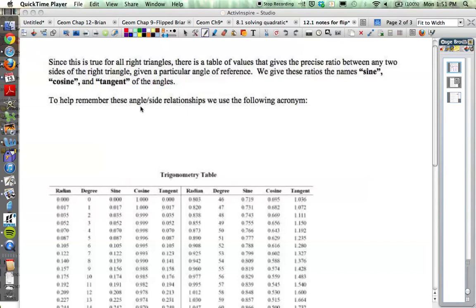Since this is true for all right triangles, there is actually a table of values that gives the precise ratio between any two sides of the right triangle given a particular angle of reference. We give these ratios the names sine, cosine, and tangent. These you're going to hear a lot about over the next few years, of course the next few days in geometry, but the next few years, we use this a lot. Here's the trigonometry table. It's got a whole bunch of numbers in it, and in the end we're going to actually figure out how this is all stored on our calculator so you don't have to carry this table with you, but for right now we're going to be referencing this table.